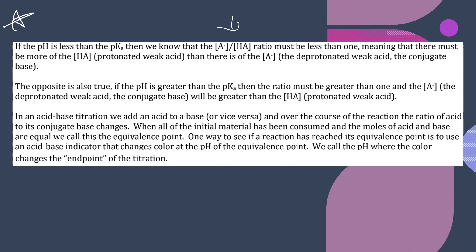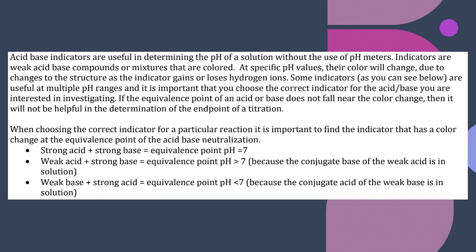When we talked about titrations, we were talking about adding acid to a base or the other way around, and the ratios change. When the moles of the acid and base are equal, we call this the equivalence point. Indicators are useful in determining the pH of a solution without using pH meters. At specific pH values, the color will change as the indicator gains or loses hydrogens. You have to choose the correct indicator for whatever you're interested in using.